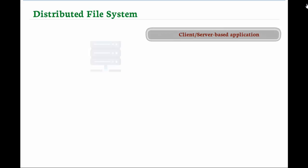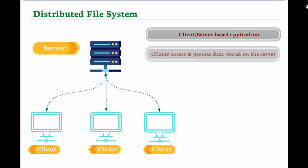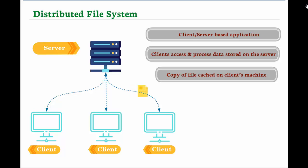A Distributed File System is a client-server based application. It allows clients to access and process data stored on the server as if it were on their own computer. When a client accesses a file on the server, the server sends the client a copy of the file which is cached on the client's computer while the data is being processed and is then returned to the server.